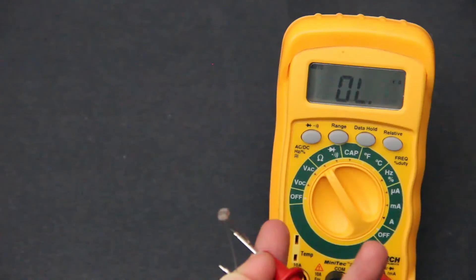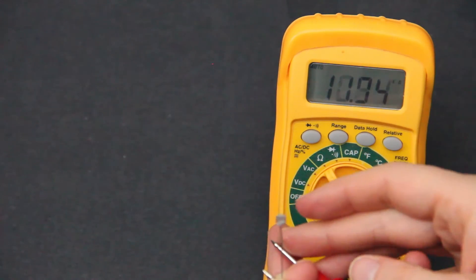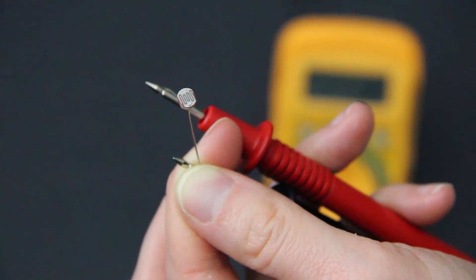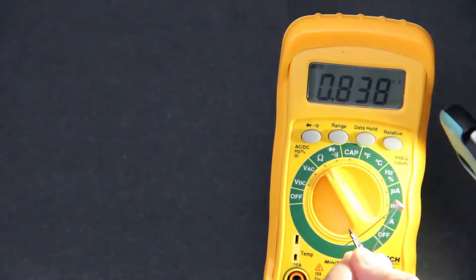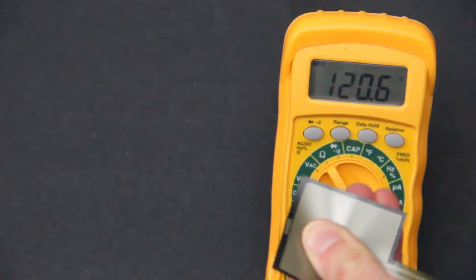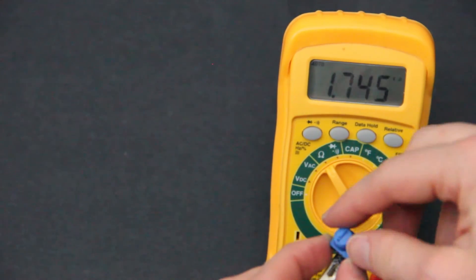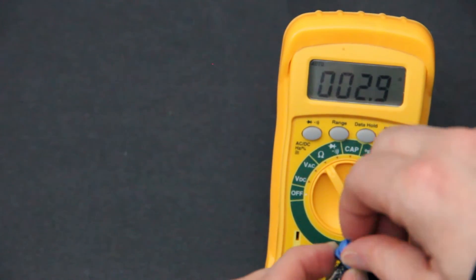To find the resistance, you can just probe the component, and some items have fixed resistance and some will have variable resistance. This photoresistor changes according to the ambient light, and the resistance of this pressure sensor changes as we push down. And this variable resistor, also known as a potentiometer, has adjustable values.